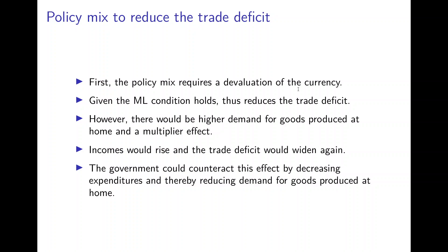So the policy mix to achieve eliminating the trade deficit is to have a devaluation of the currency first. If the Marshall Lerner condition holds, this reduces the trade deficit, but there would be additional effects on income and therefore imports, so the trade deficit would emerge again.